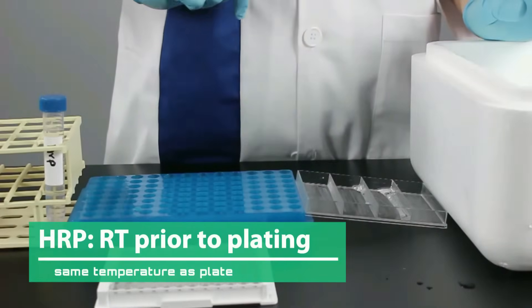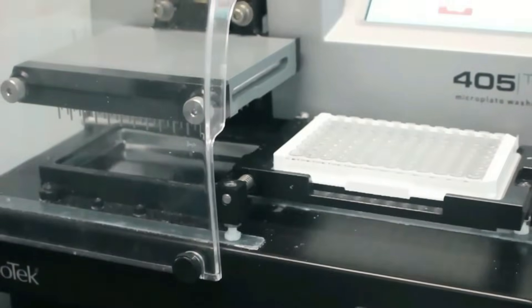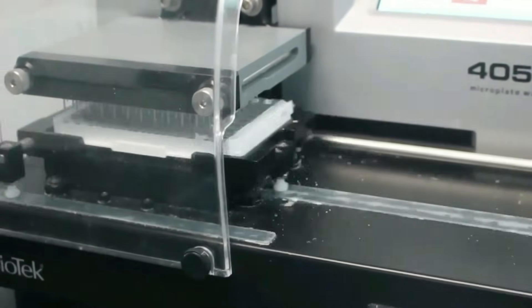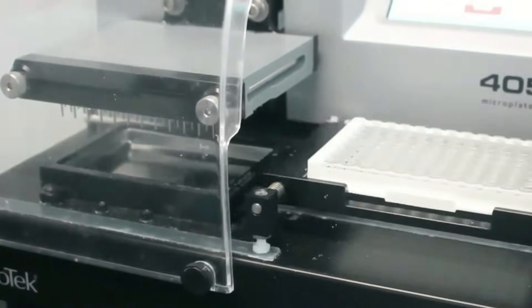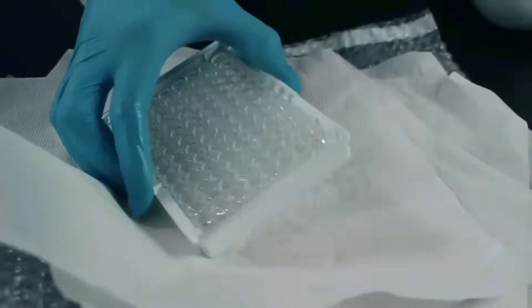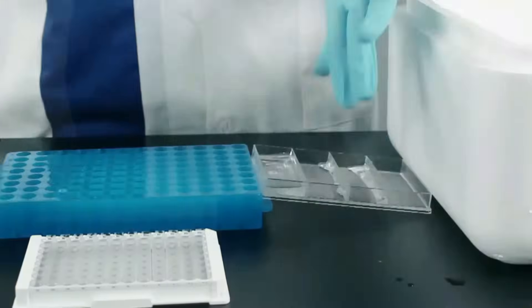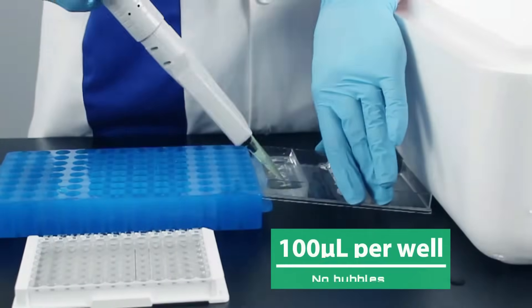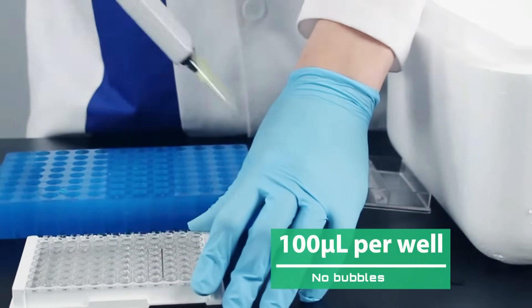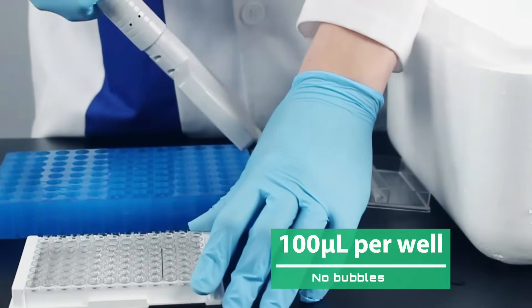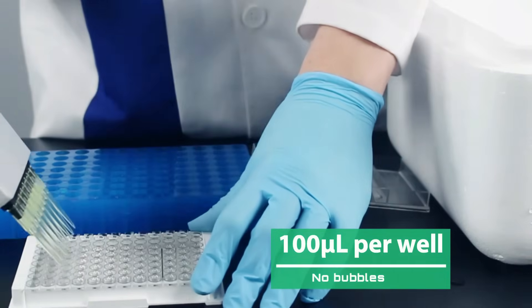HRP should be the same temperature as the plate prior to plating. Once the detection antibody is done incubating, wash the plate again. Make sure you thoroughly remove the wash buffer. Homogenize the mixture with a vortex. Add 100 microliters per well with no bubbles.